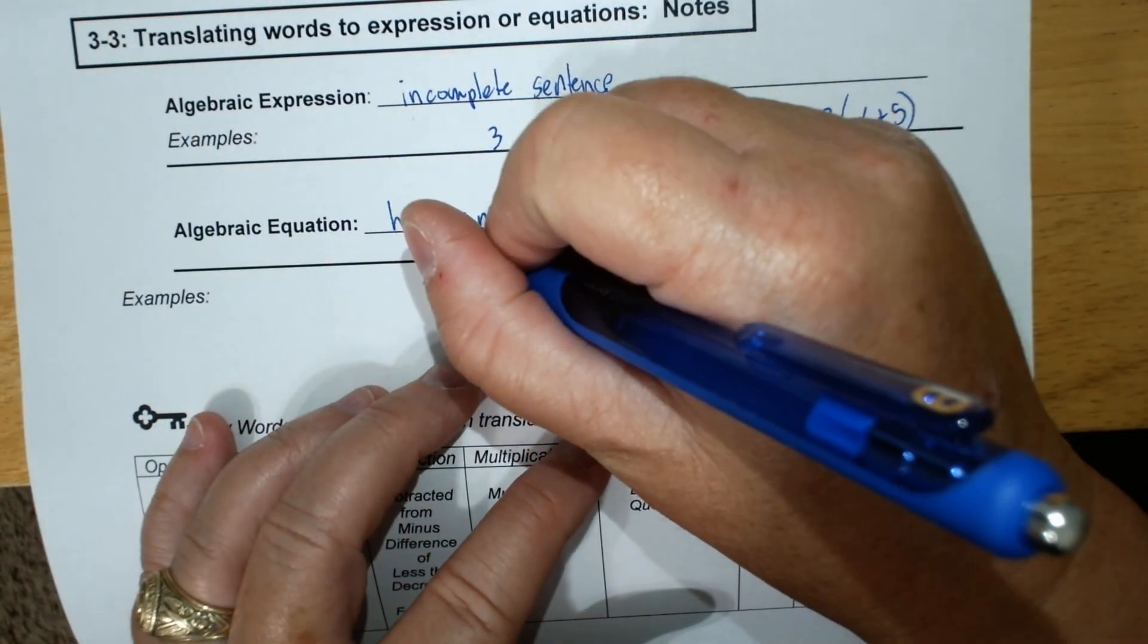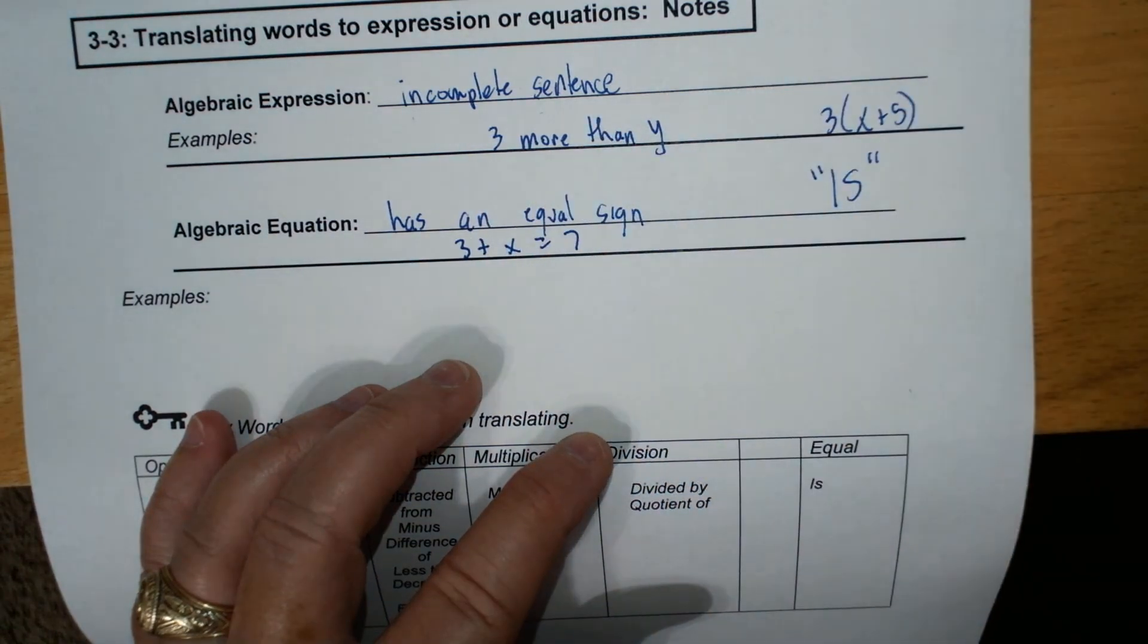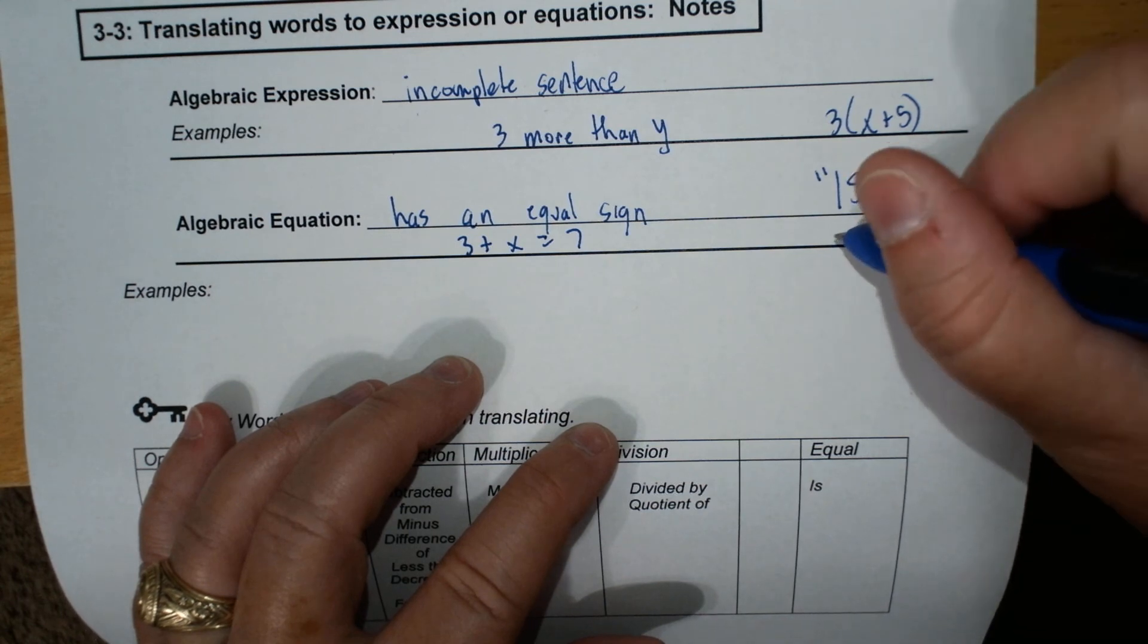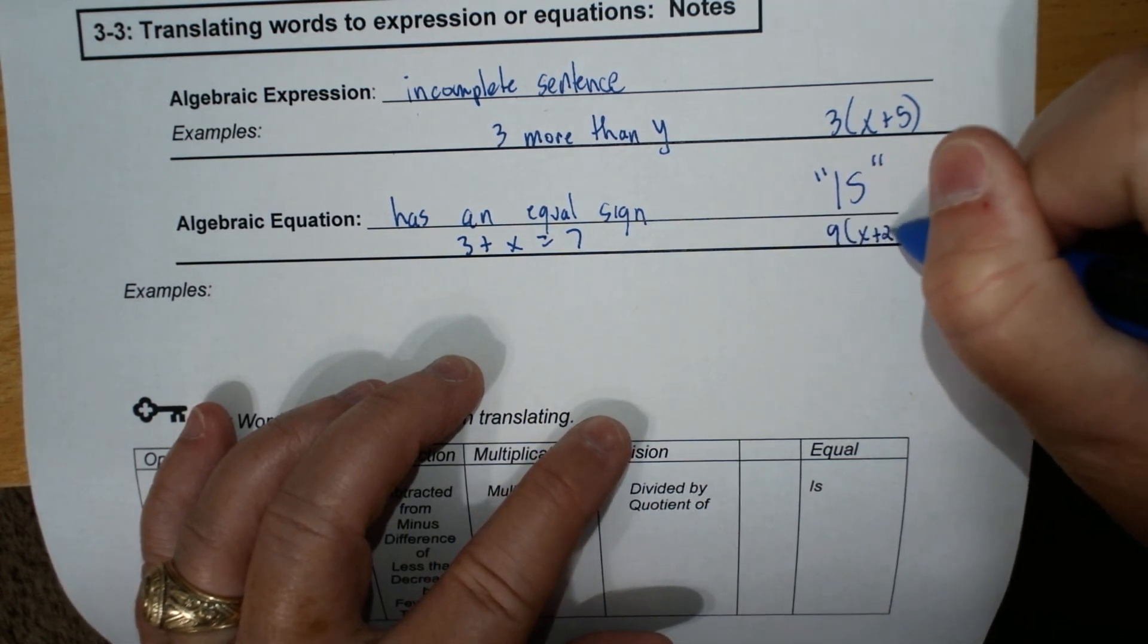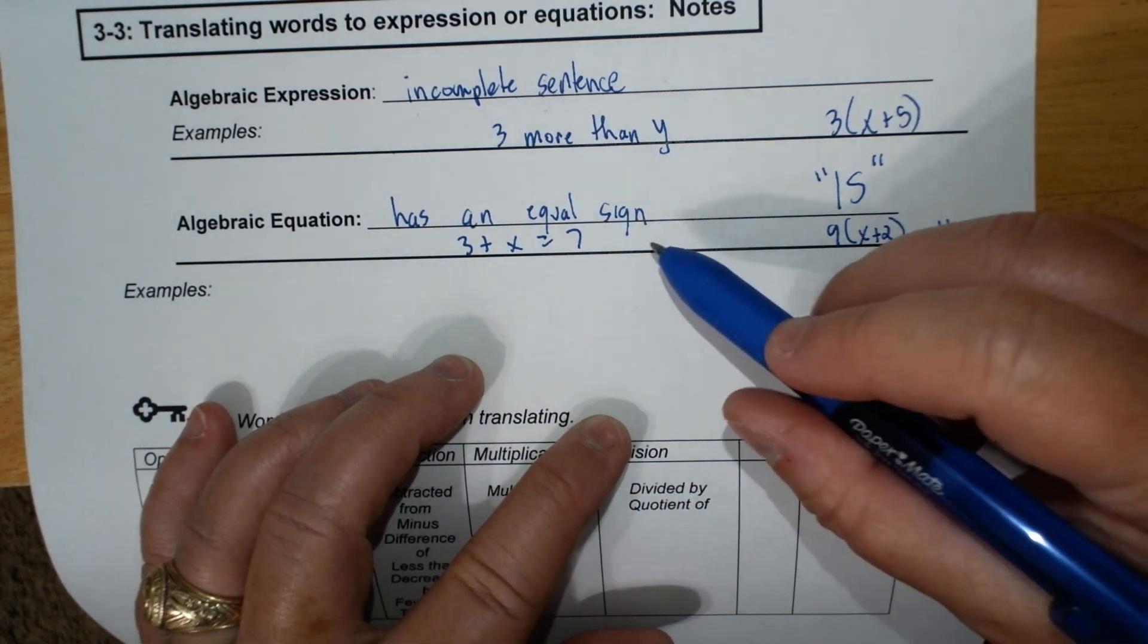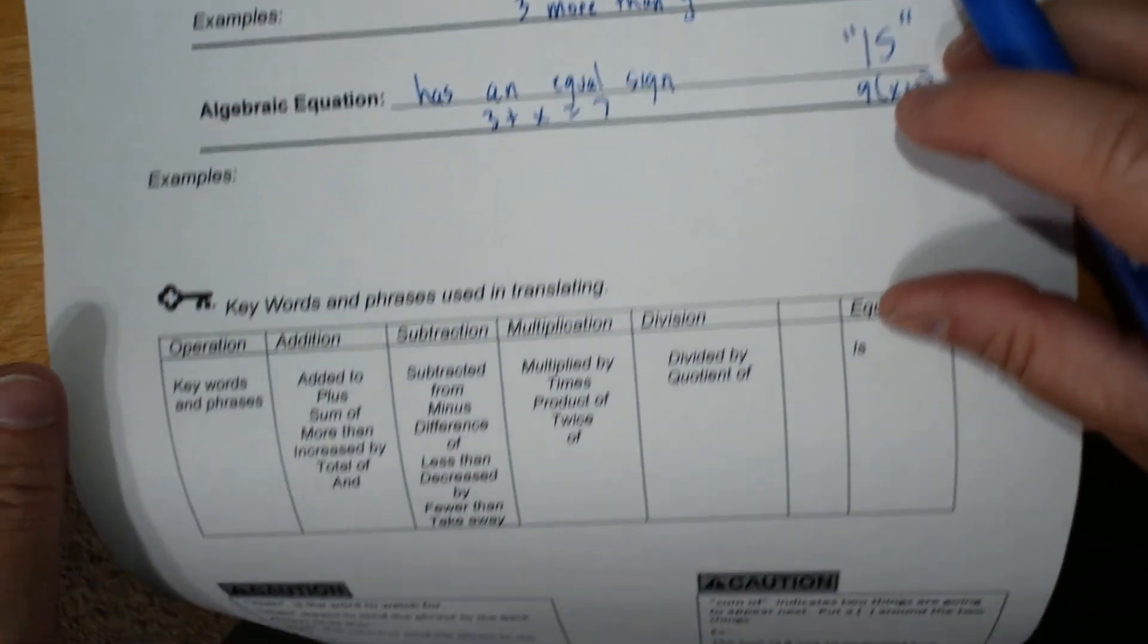And so if you write 3 plus x equals 7, that's an algebraic equation. If you do 9 times x plus 2 equals 11, because of that equals sign, that is an algebraic equation. Okay, so those are your examples.